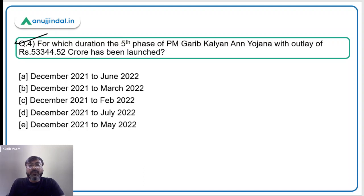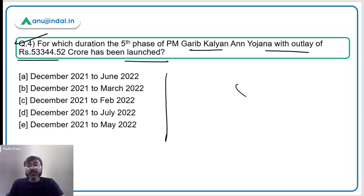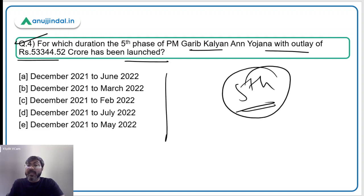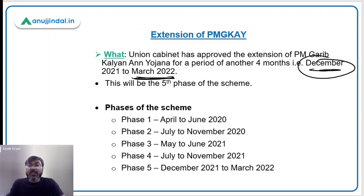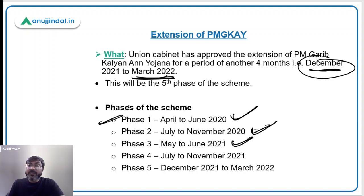Question number 4: for which duration has the fifth phase of PM Garib Kalyan Anna Yojana, with an outlay of Rs. 53,344.52 crore, been launched? The fifth phase has been approved by the Union Cabinet recently and will run from December 2021 to March 2022. For reference: Phase 1 was April–June 2020, Phase 2 July–November 2020, Phase 3 May–June 2021, Phase 4 July–November 2021, and Phase 5 December 2021–March 2022.